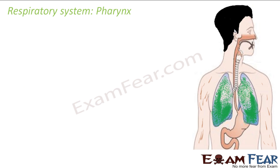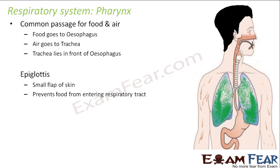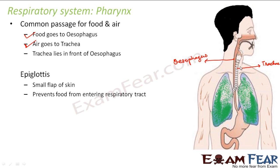The next part is the pharynx, which is a common passage for both food and air. Both food and air reach the pharynx, from where it divides into two different tubes: food goes to the esophagus and air goes to the trachea. The trachea lies in front of the esophagus. Looking at the diagram, the trachea is here and the red-colored pipe is the esophagus. The pharynx is the point where food and air segregate into two different pipes.